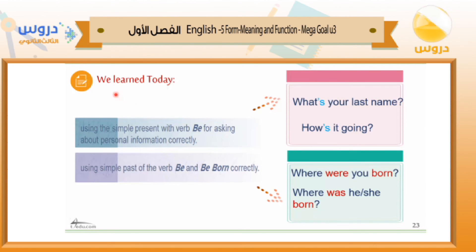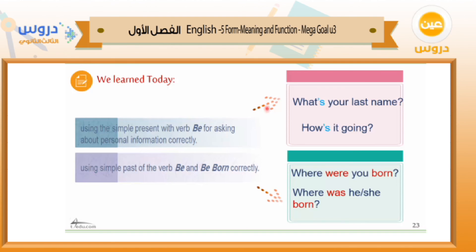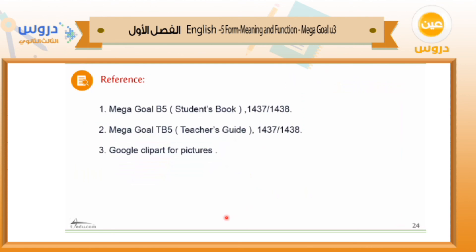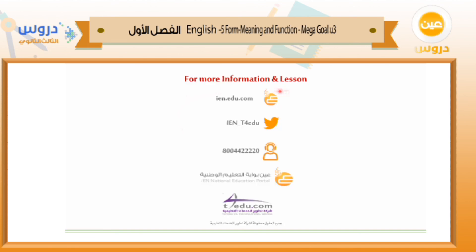This ends our lesson today. We learned: using simple present with verb be for asking about personal information correctly, including auxiliary verbs do and does and their assimilation in pronunciation. And using simple past of verb be and 'be born' correctly — 'Where were you born?' and 'Where was he/she born?' If you need to review the references, check the reference box. You can contact through the account numbers and website provided. Hope you all enjoyed — see you next time, thank you very much.